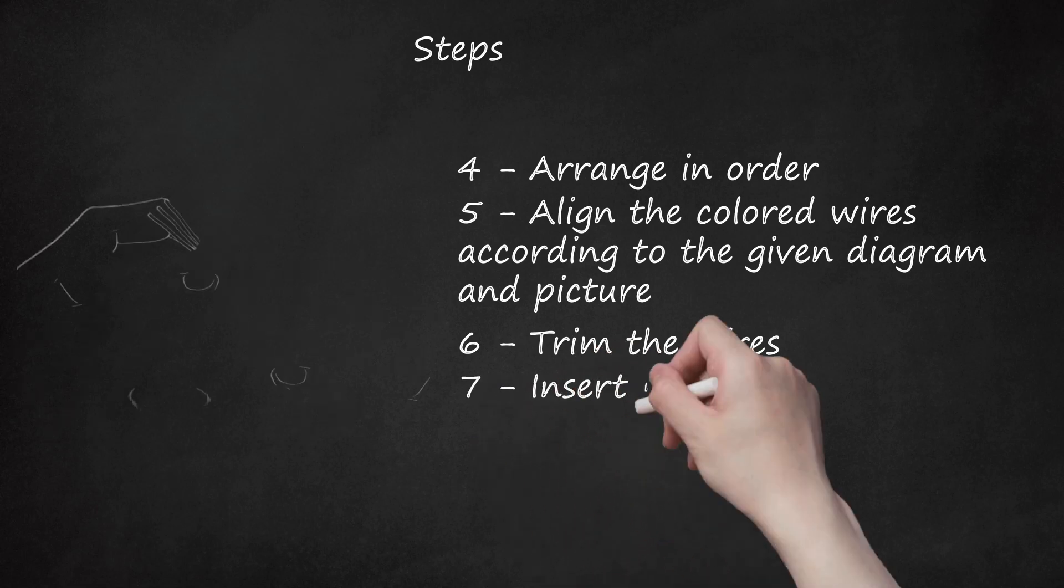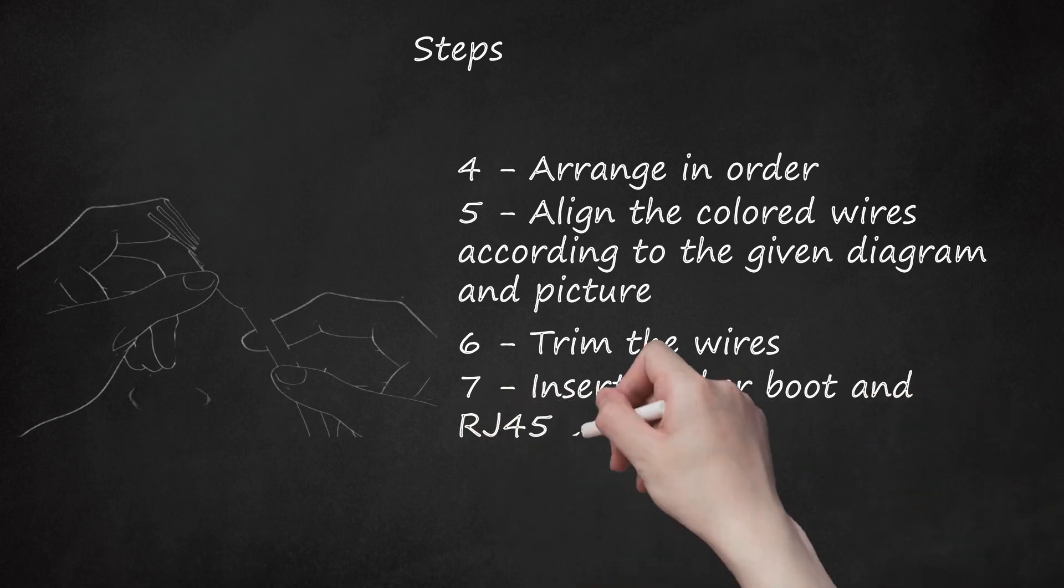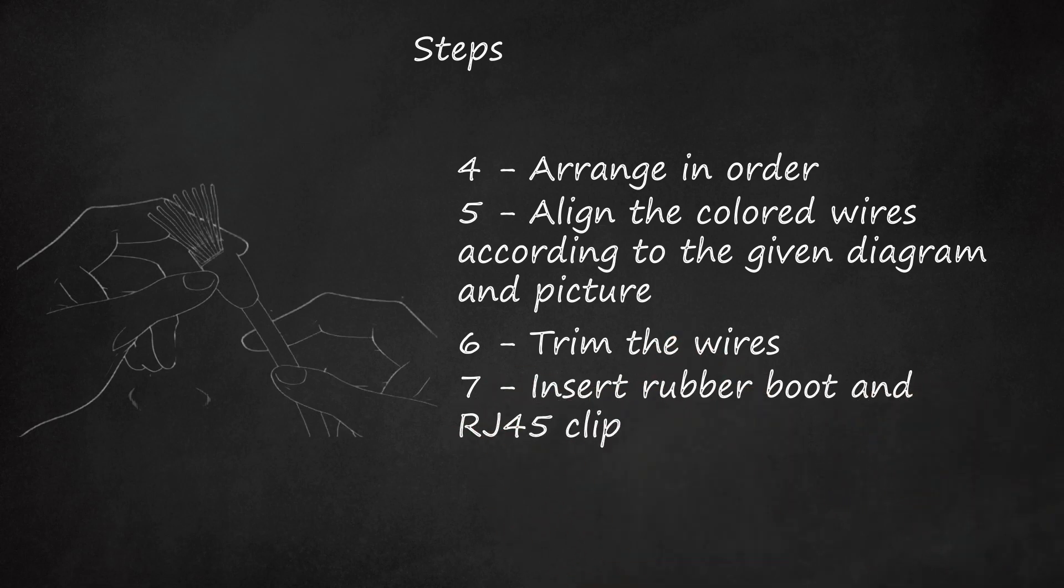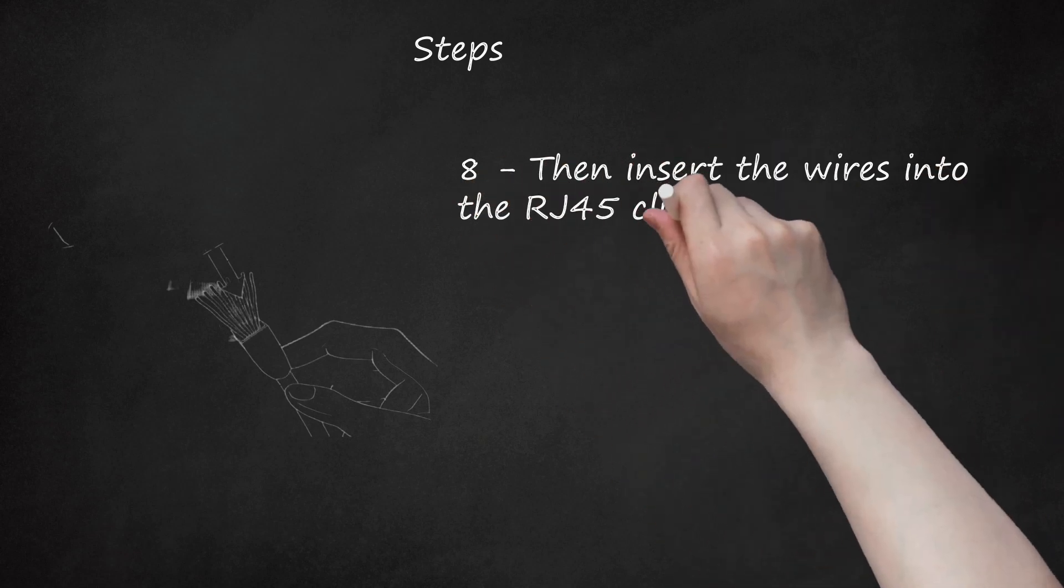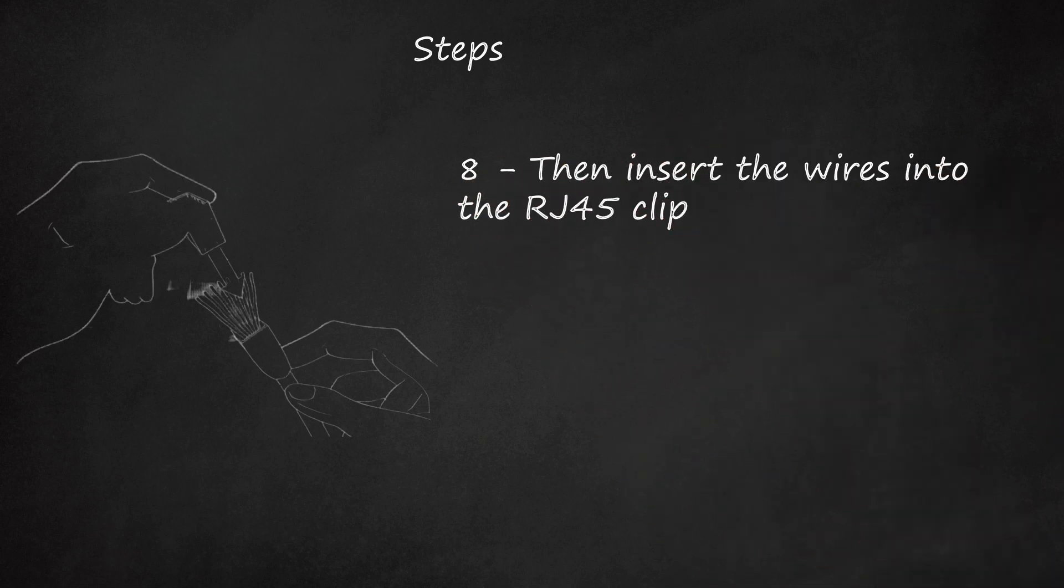Step 7: Insert rubber boot and RJ45 clip. Insert the rubber boot on both ends of the cable. Step 8: Then insert the wires into the RJ45 clip. Make sure each wire is fully inserted into the front of the clip.